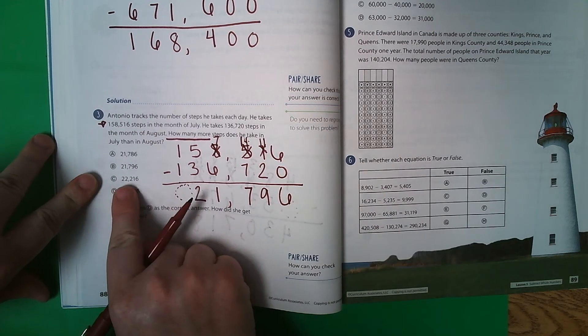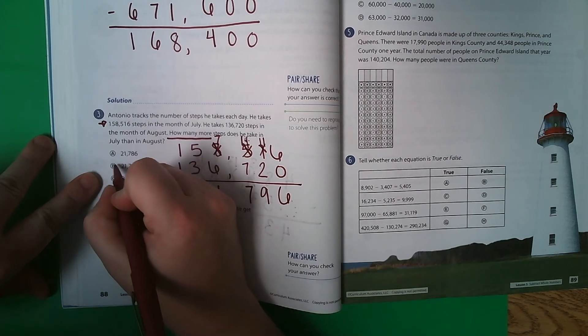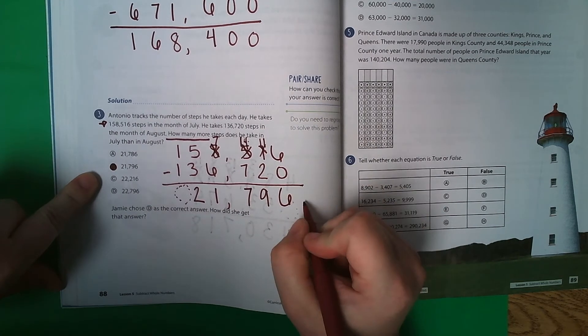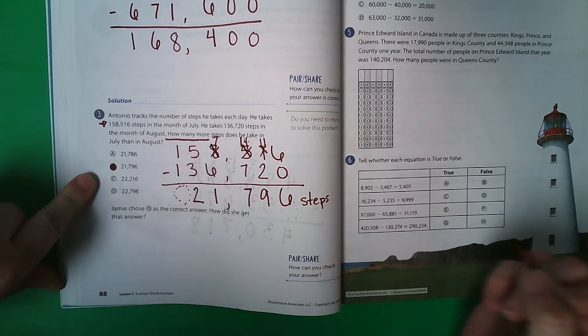So 21,796. So over here we've got to find 21,796, and it's B. And technically this should have a label of steps on it.